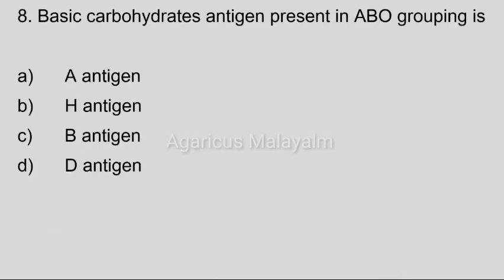Eighth question: Basic carbohydrate antigen present in ABO grouping is? Answer options — Option A: A antigen. Option B: H antigen. Option C: B antigen. Option D: D antigen. Correct answer: Option B, H antigen.